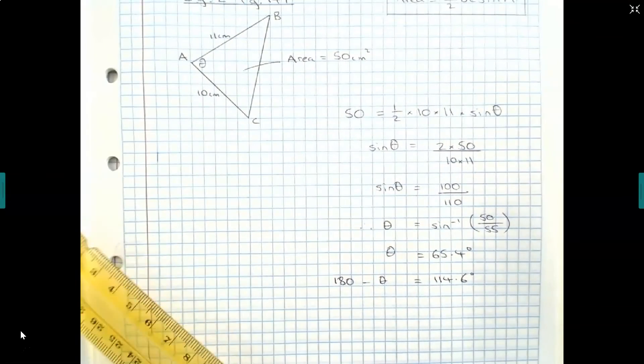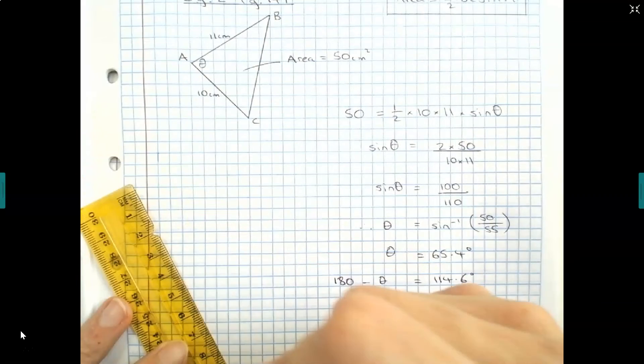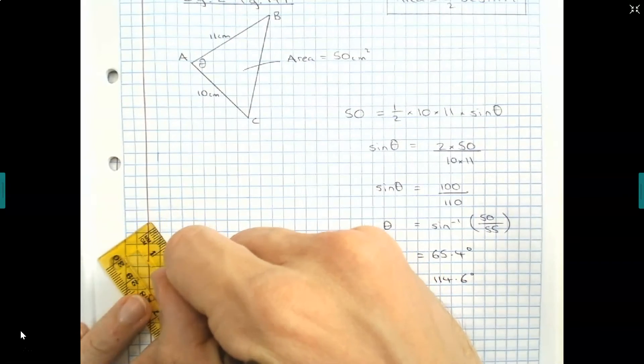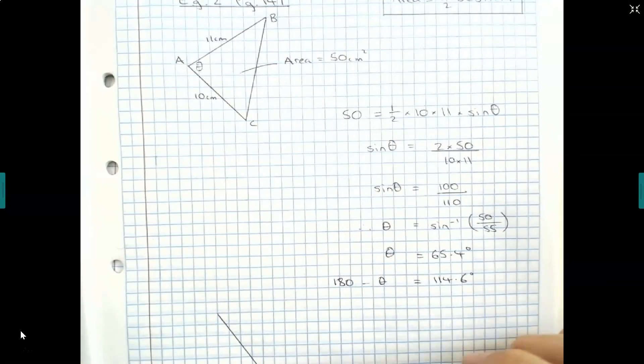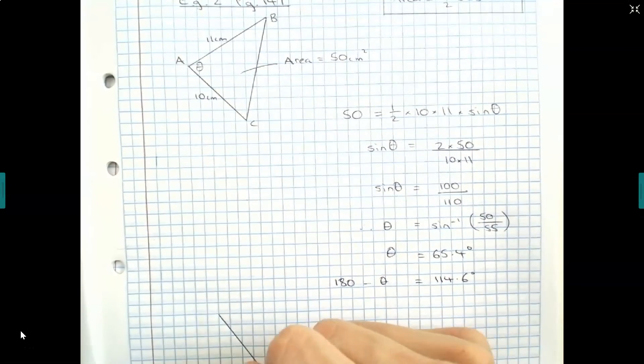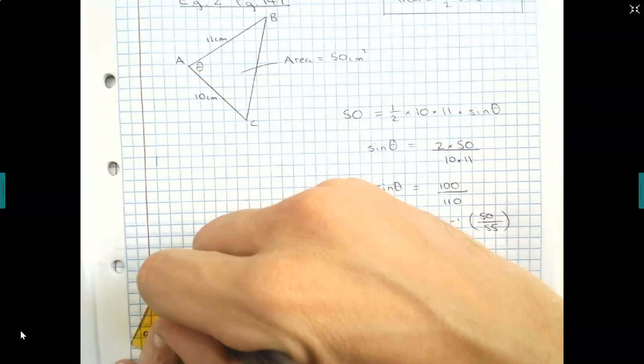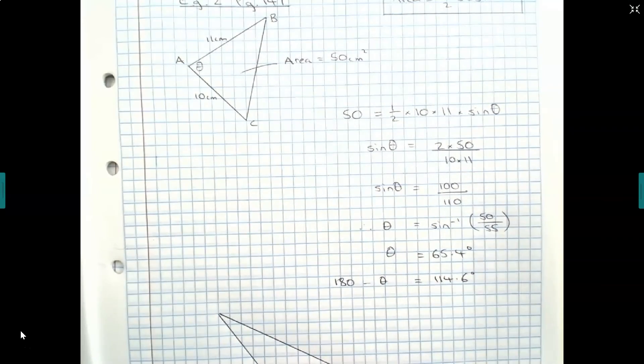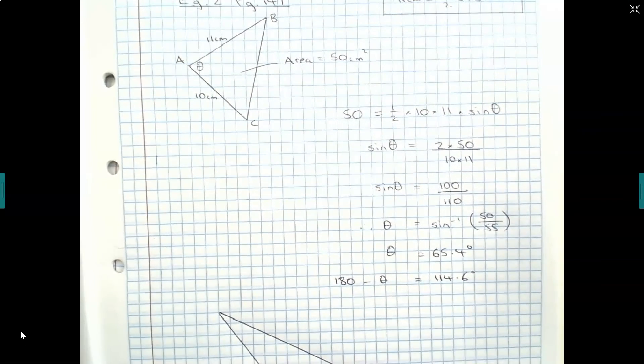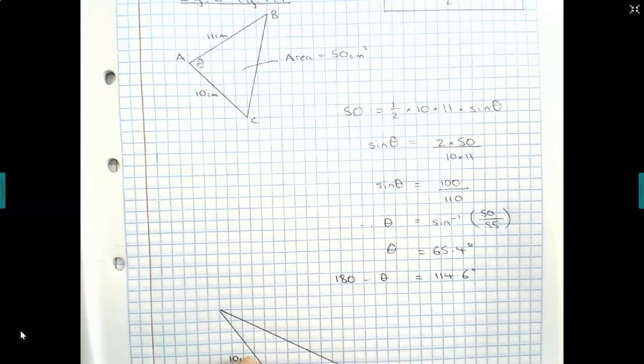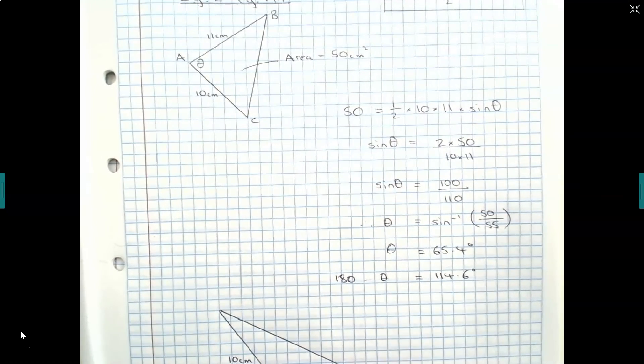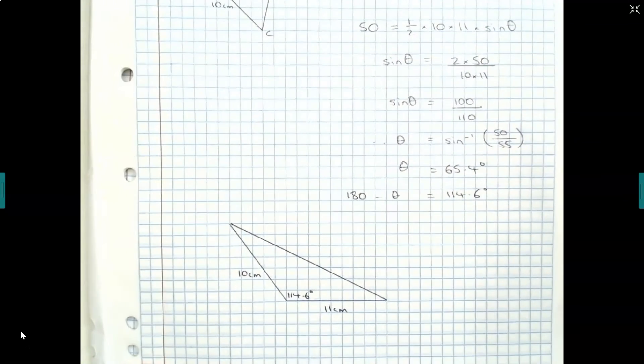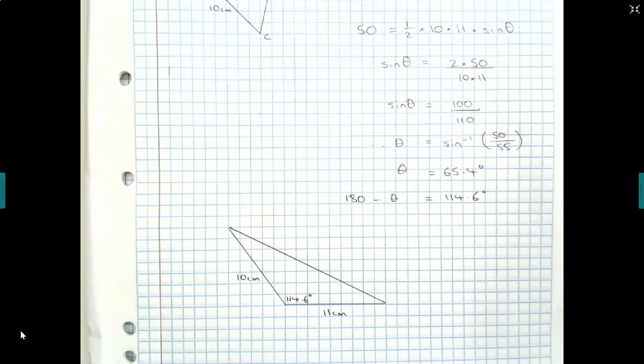It would just mean that we could have a triangle that still has side lengths 10 and 11, but now the included angle is obtuse. So if it looks something more like this where the included angle is 114.6 degrees, this could be 10 centimeters and this being 11 centimeters. This would also result in an area of 50 centimeters squared.